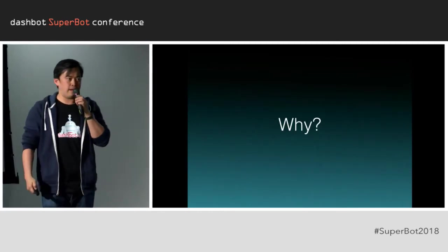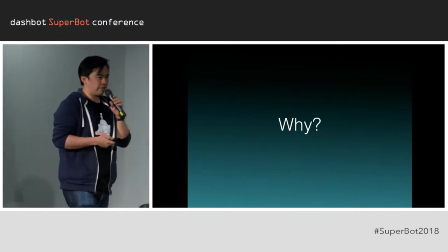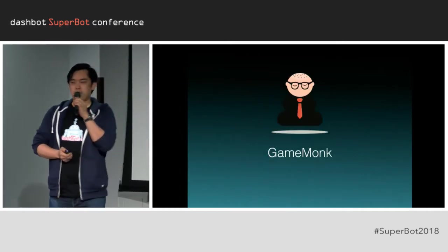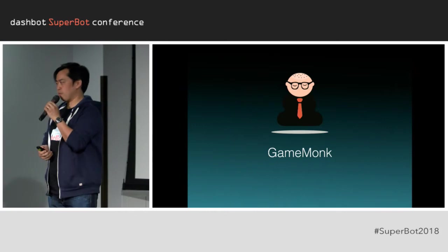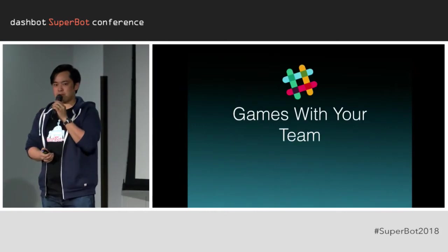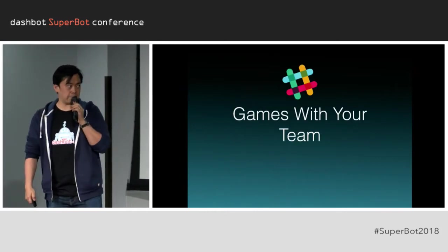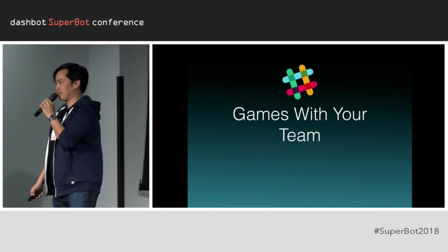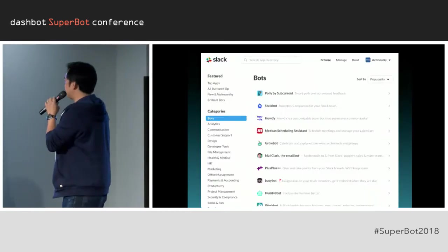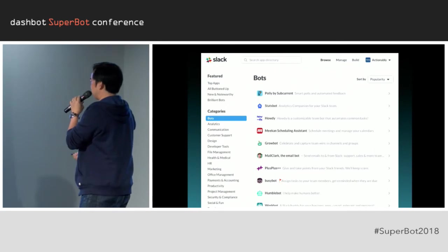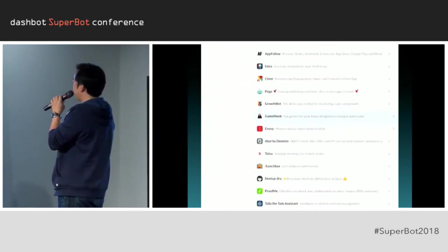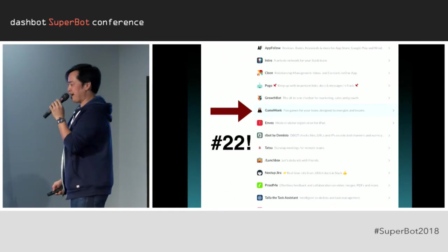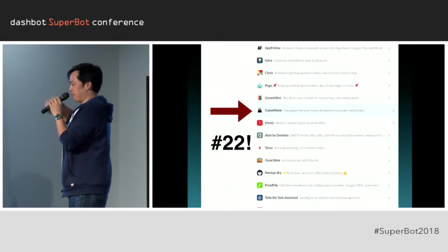Why did we do this? Prior to founding DashBot, we were actually building bots ourselves. We built a bot called GameMonk, which is a Slack bot that allows you to play games with your team. It's still one of the most popular bots in the Slack ecosystem — we are number 22 on the leaderboard.